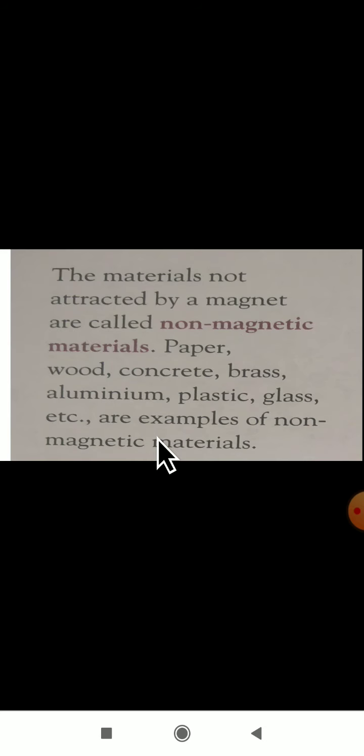Now we will study about non-magnetic materials. Materials which are not attracted by a magnet are called non-magnetic materials. For example, paper, wood, concrete, brass, aluminium, plastic, and glass — these are all non-magnetic materials and will not be attracted by a magnet. Dear students, we have completed magnetic and non-magnetic materials. In the next video class, we will move to the further part of the chapter. Study till here. Have a nice day. Thank you, bye.